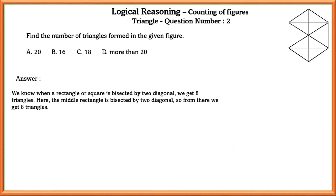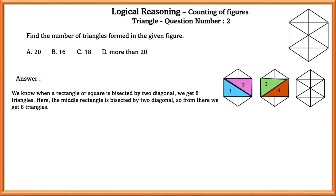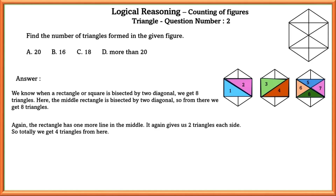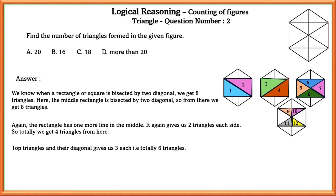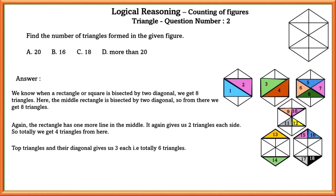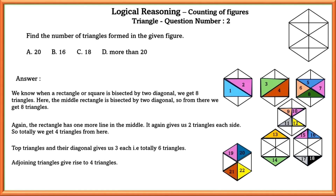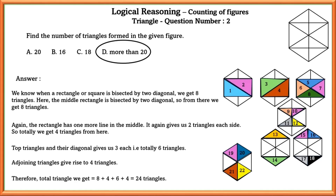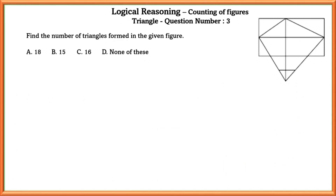Question number two: find the number of triangles formed in the given figure. When a rectangle or square is bisected by two diagonals, we get eight triangles. The middle rectangle is bisected by two diagonals, giving eight triangles. An additional line in the middle gives four more triangles. The top triangles and their diagonals give three each, totaling six triangles. Adjoining triangles give rise to four triangles. Therefore, the total is 24 triangles, which is more than 20, so the answer is option B.